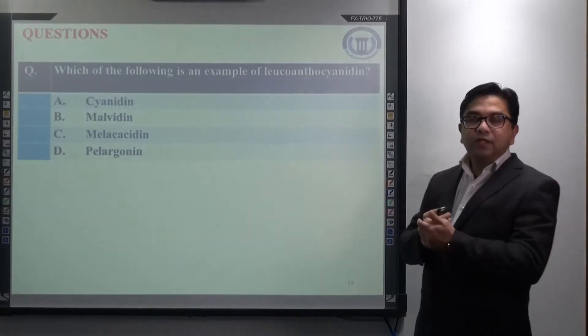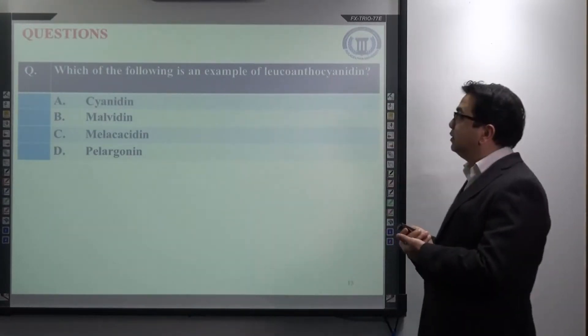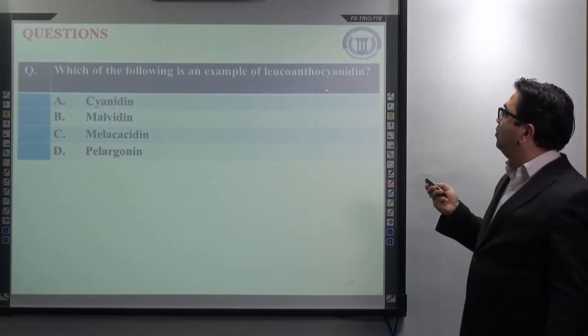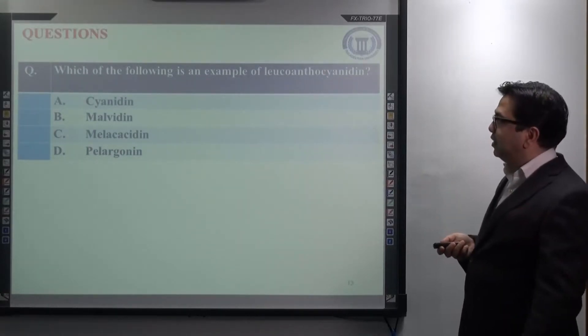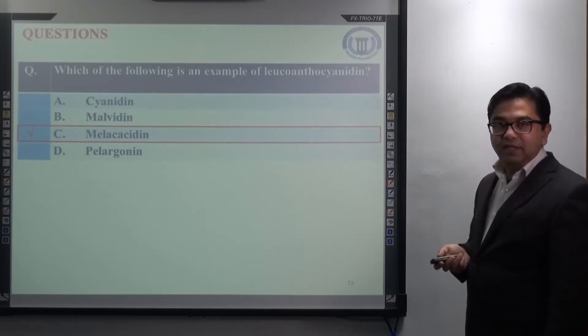These are the pictures of Lonchocarpus and Derris. Now, I would like to ask you certain questions relevant to the chapter. Which of the following is an example of leucoanthocyanidin? We have studied it just now. Can you tell me? The correct answer is melacacidin.